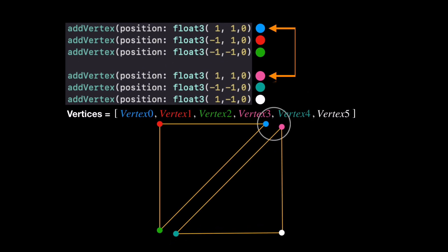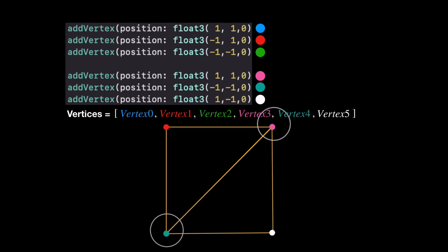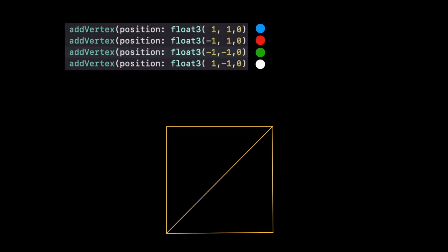There's a problem staring us right in the face: we are using the same position in two different vertices. In this case it's negative one, negative one — the x is negative one, the y is negative one — the same exact position for both. So really we only have four different positions in space but we're using six vertices to represent them. Instead of six vertices, we're going to send in four: the blue, red, green, and white.